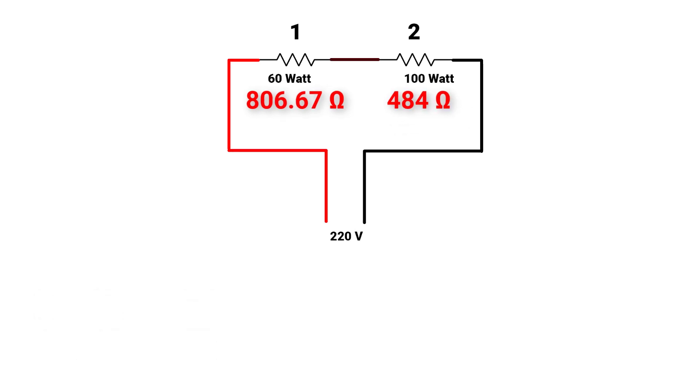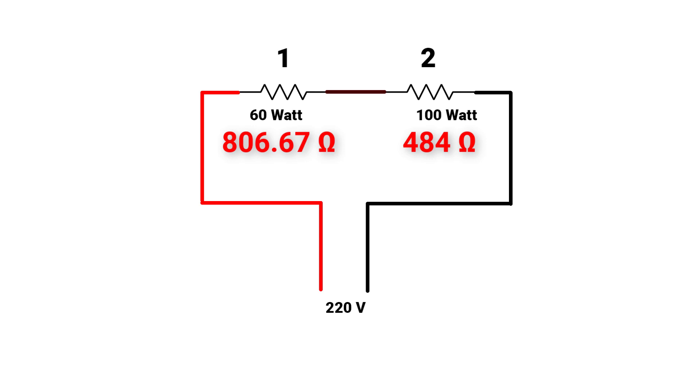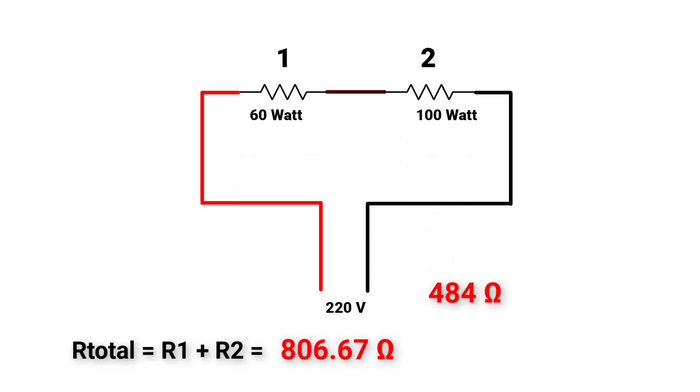Now, we have a simple circuit with two series resistances. So R total will equal to R1 plus R2, which will equal to 1290.67 Ohm.